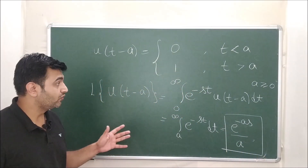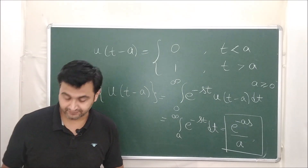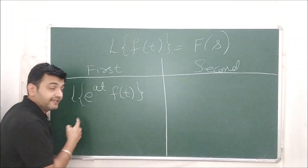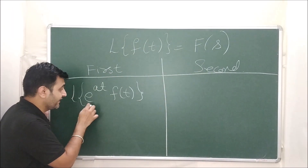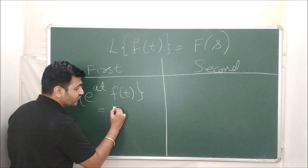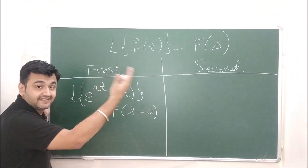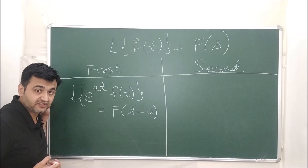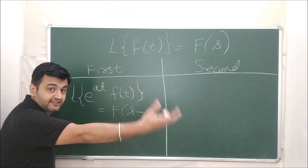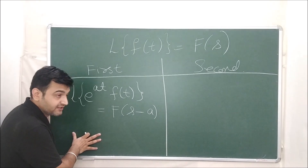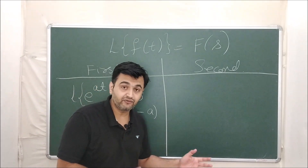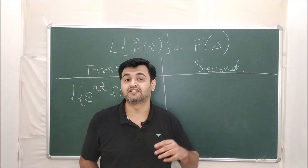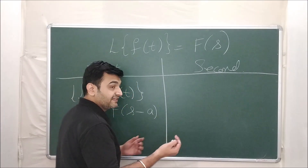Now let's see what the second shifting theorem is. Suppose f is a function whose Laplace is F(s). If you recall the first shifting theorem: if you multiply our function by an exponential function in t space, then in the Laplace there is a shift by a units in s space. The second shifting theorem says the converse: if you do a shifting in t space, then in the Laplace you have to multiply by the exponential function.